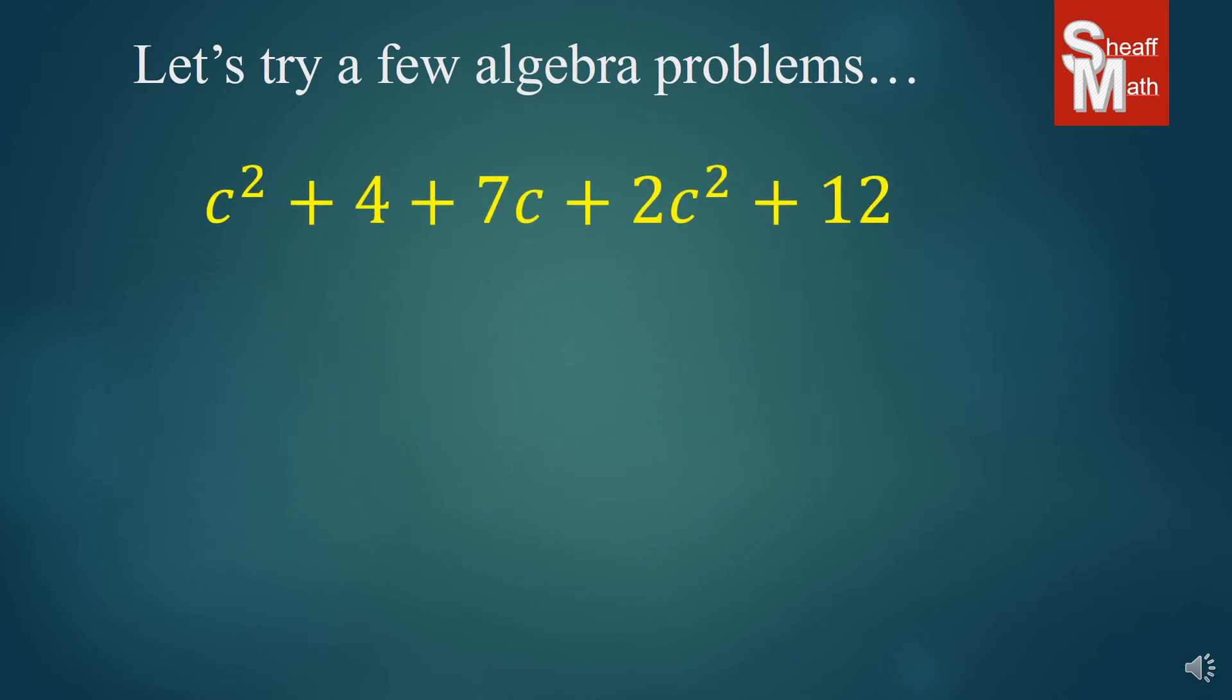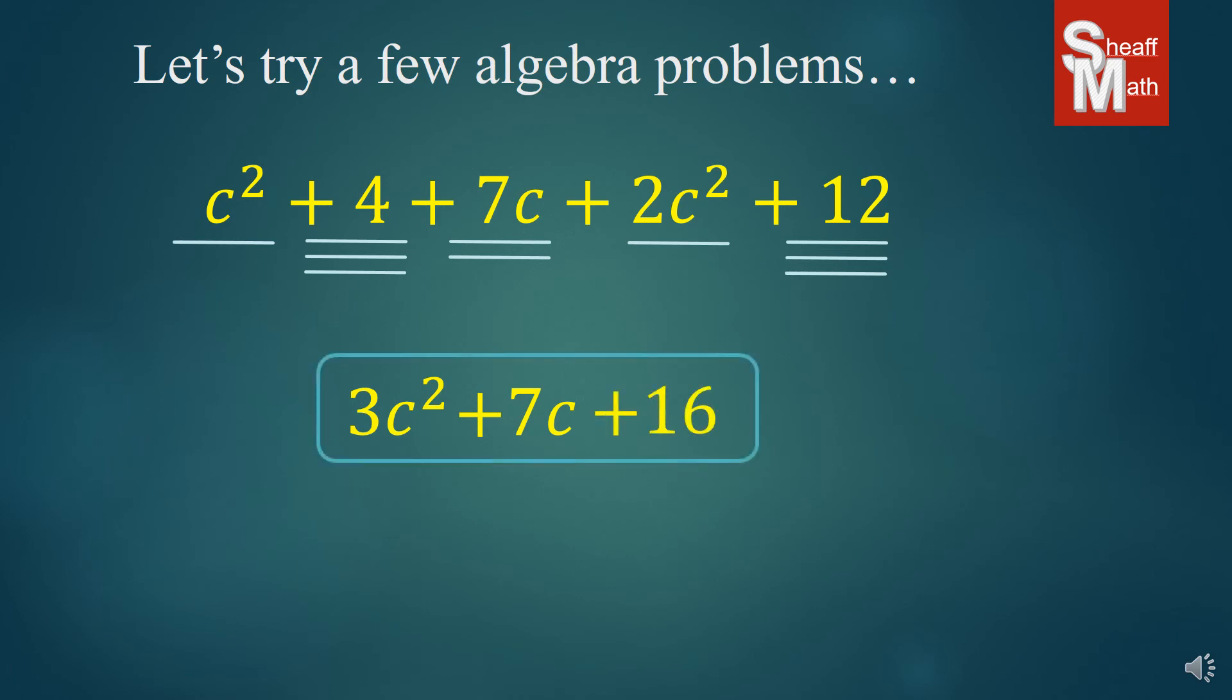All right. How about this one? We have c's and c squareds and numbers. And so the c squared and the two c squared are like terms. And that's one c squared plus two c squared. And that makes three c squared. And then we have a c all by himself. And so we just bring him down. Then we've got two whole numbers. We have to combine four and 12, which makes 16. And so there it is. We have combined all of the terms that we could.